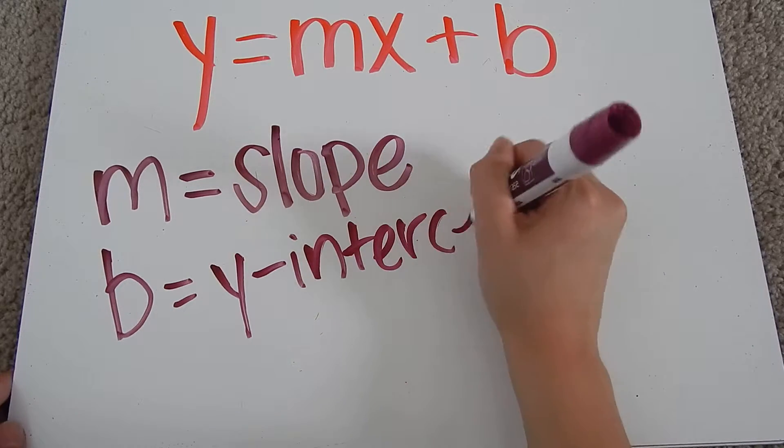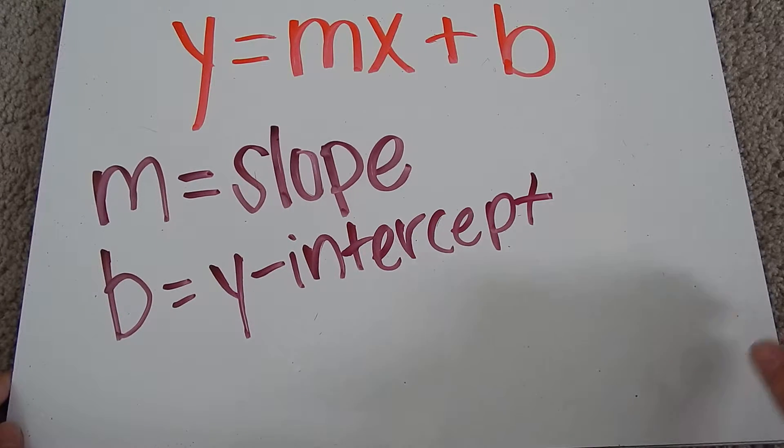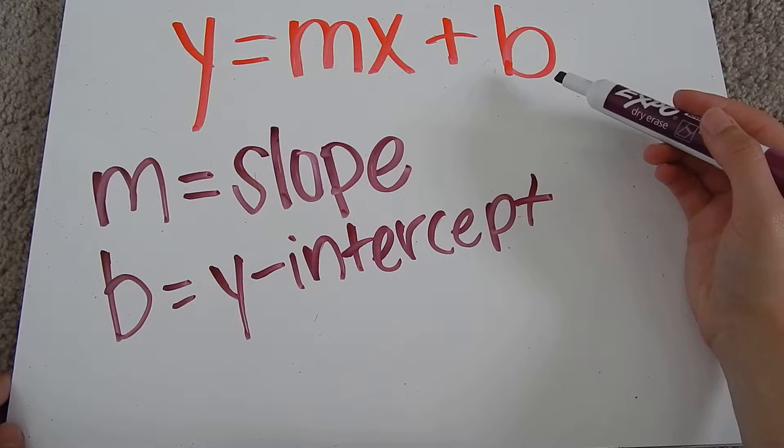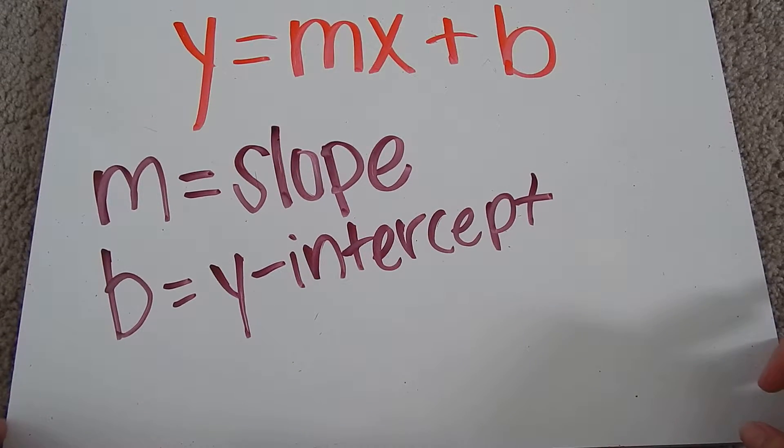So if we're trying to find slope from an equation, first of all we need to make sure we have slope-intercept form, then we can easily find it by just looking at what's attached to the x.